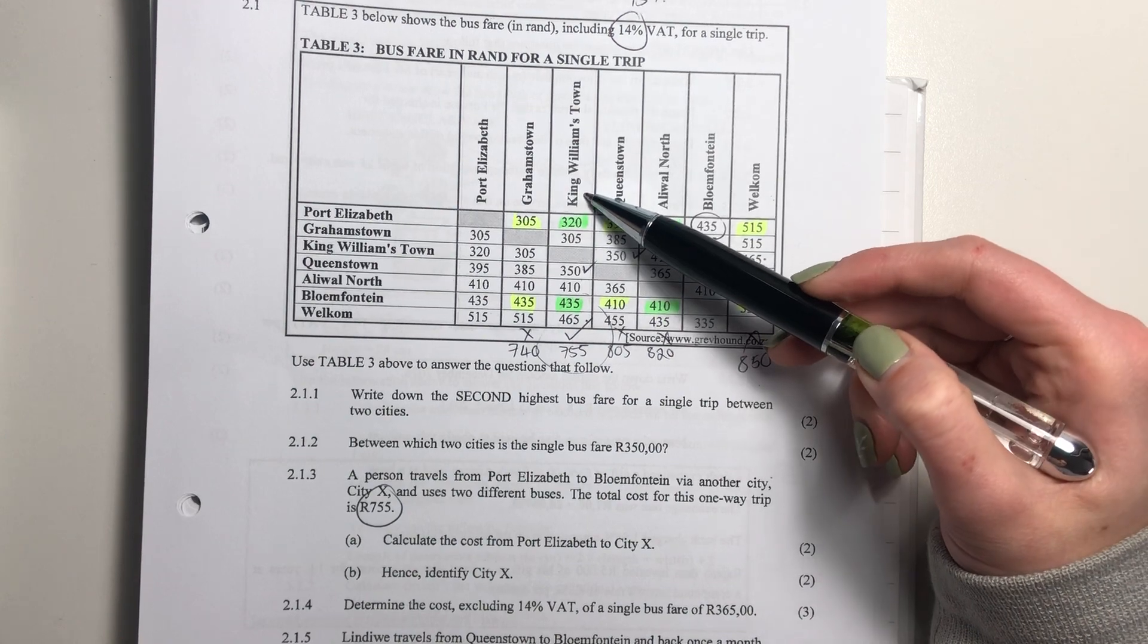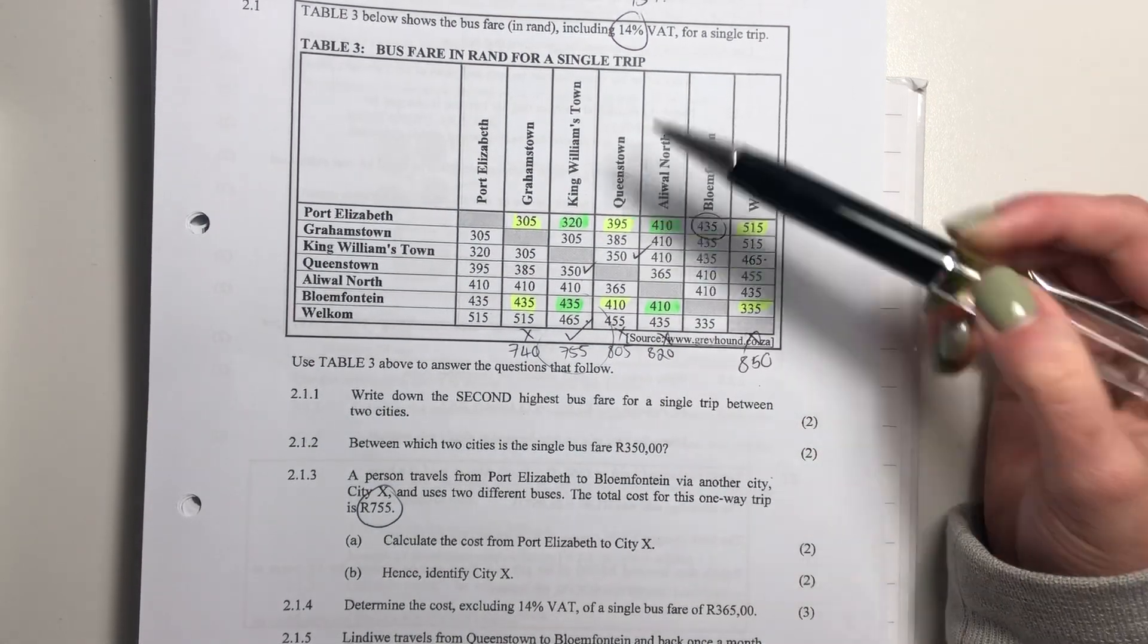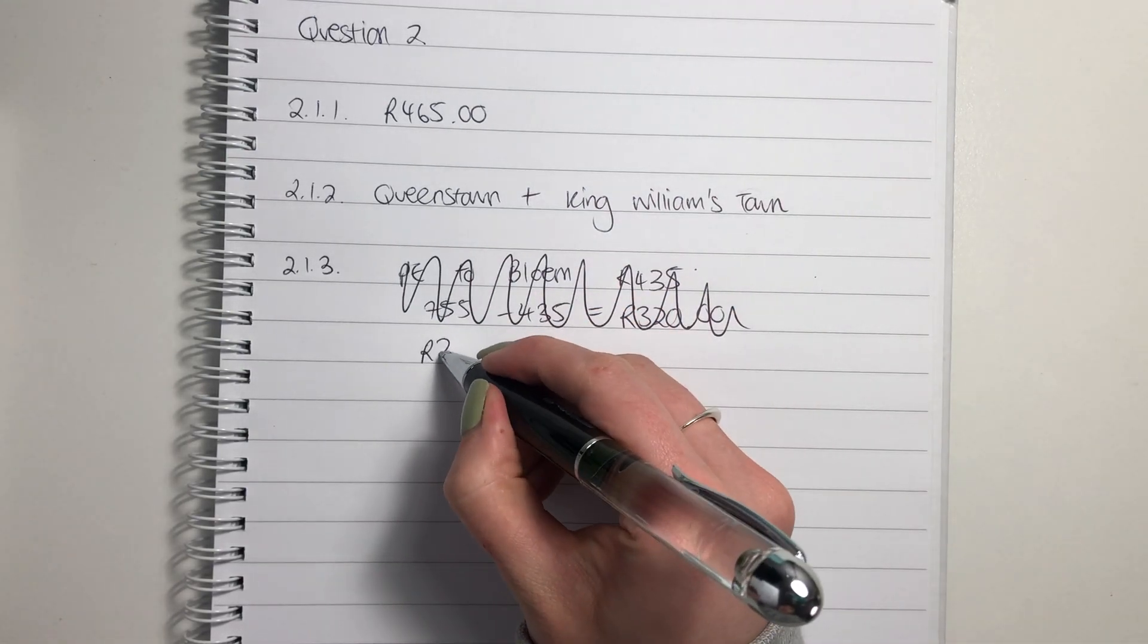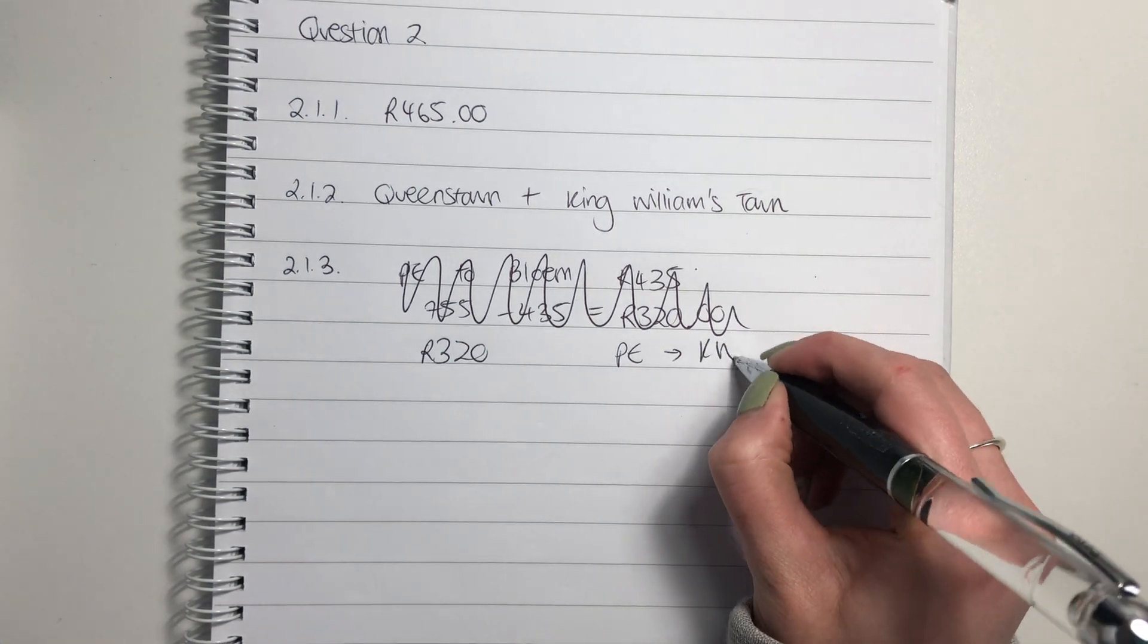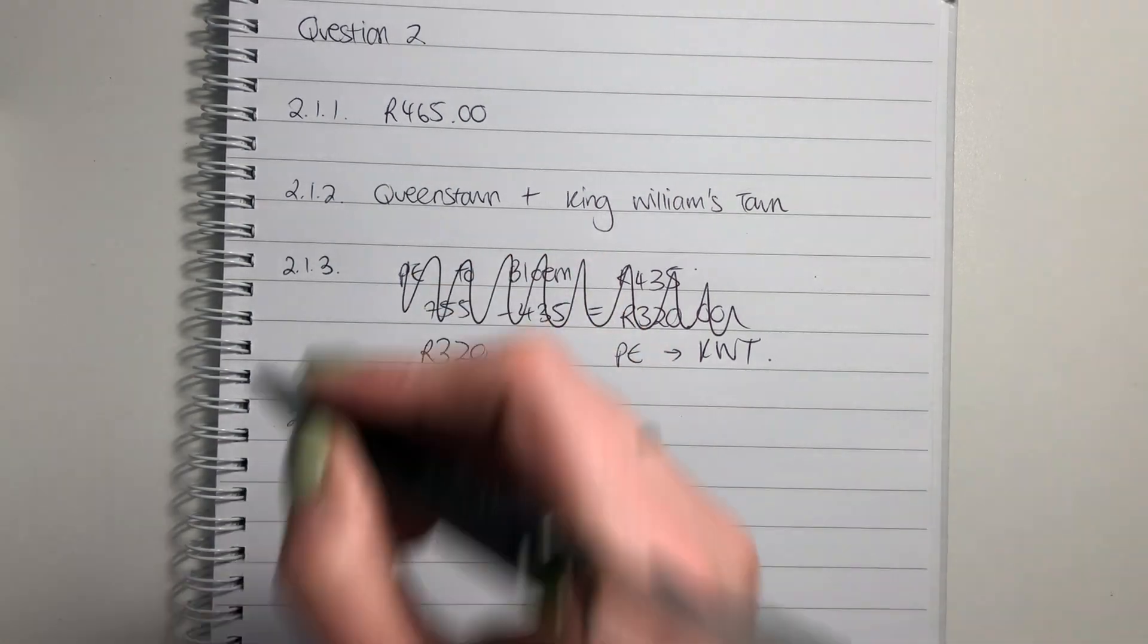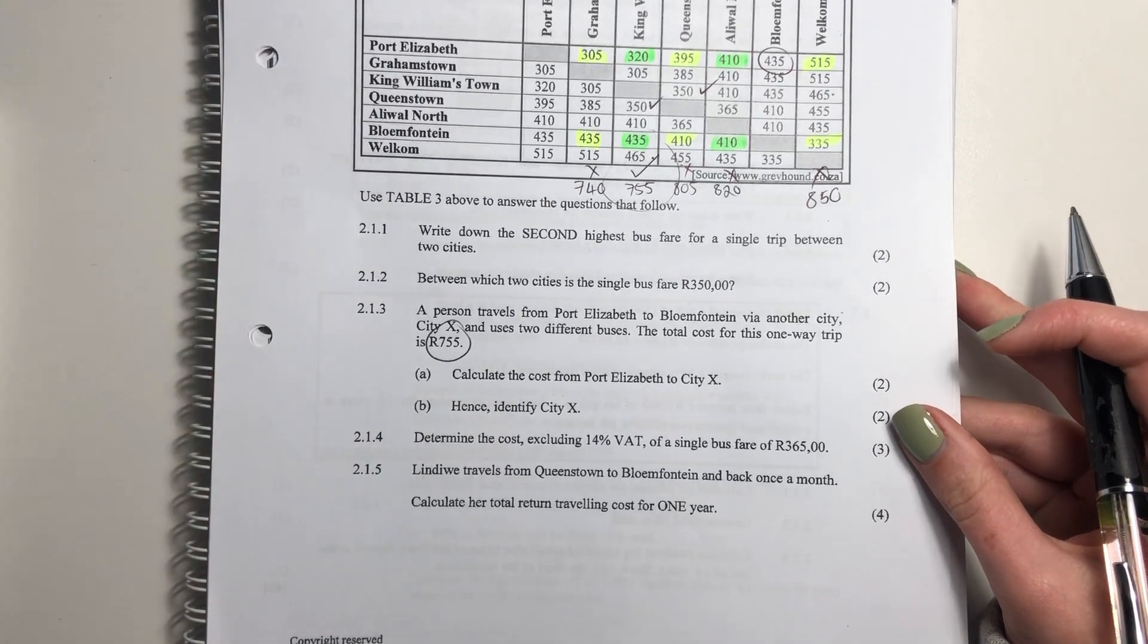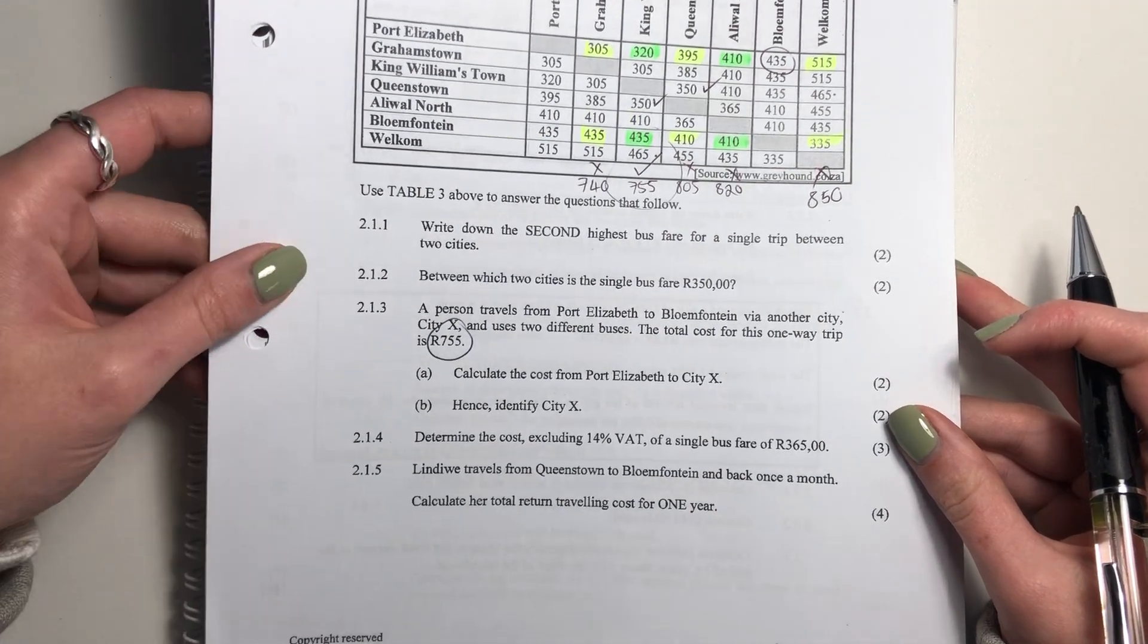The only city it can be is King Williamstown. So to calculate the cost from PE to city X, from PE to city X, we know it's going to be 320 rand. So you can just write there 320 rand. And you can say, well, that's from PE to King Williamstown. Now, it's a bit of a weird one because a lot of the questions here, it's assuming that you only find city X in the second question. But I don't agree with that line of thought. They actually should have asked you city X first and then asked you for the amount.